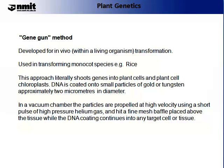So what is the GeneGun method? It's a method for introducing genes. It was developed for in vivo — that's within a living organism — transformation. It's used extensively in transforming monocots; one such example is the transformation of rice. As the name suggests, this approach literally shoots genes into the plant cells and the plant cell chloroplasts.